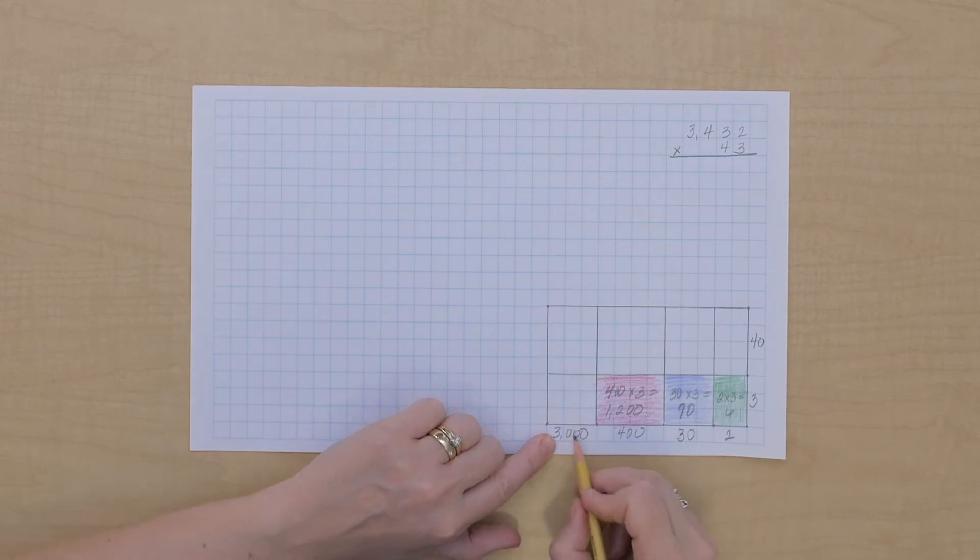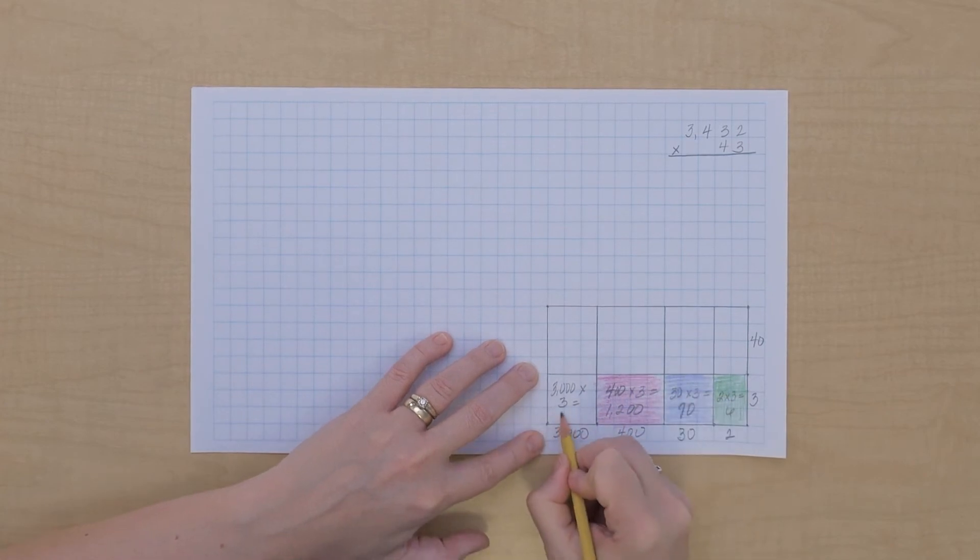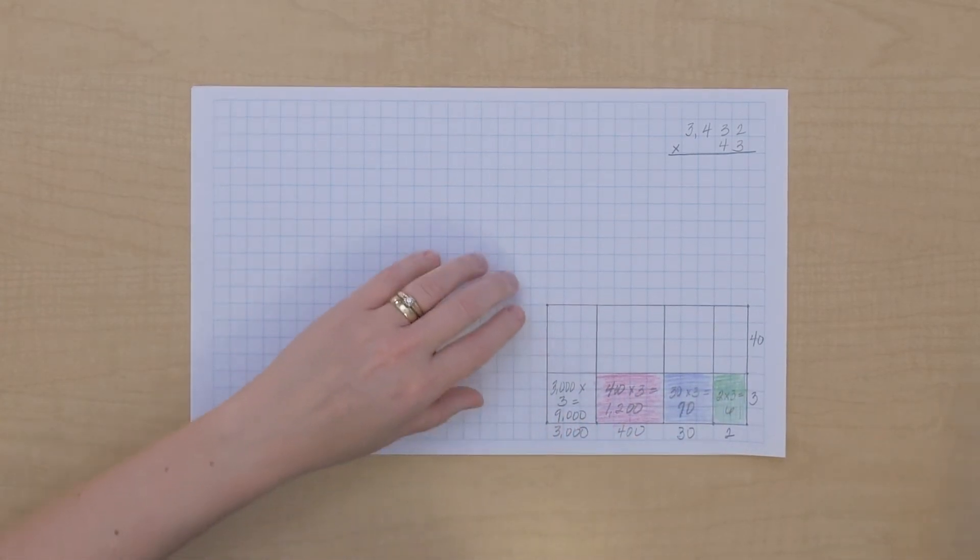And then we have 3000 times 3, which equals 9,000, and we're in the thousands, so that'll be a green square.